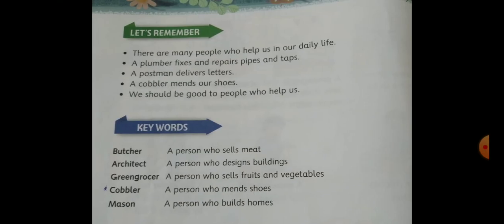So children, what have we studied today? Let's remember: there are many people who help us in our daily life. A plumber fixes and repairs pipes and taps. A postman delivers letters. A cobbler mends our shoes. We should be good to people who help us. The keywords we studied today are: butcher — a person who sells meat; architect — a person who designs buildings; greengrocer — a person who sells fruits and vegetables; cobbler — a person who mends shoes; mason — a person who builds homes. Read the lesson and practice reading. Thank you.